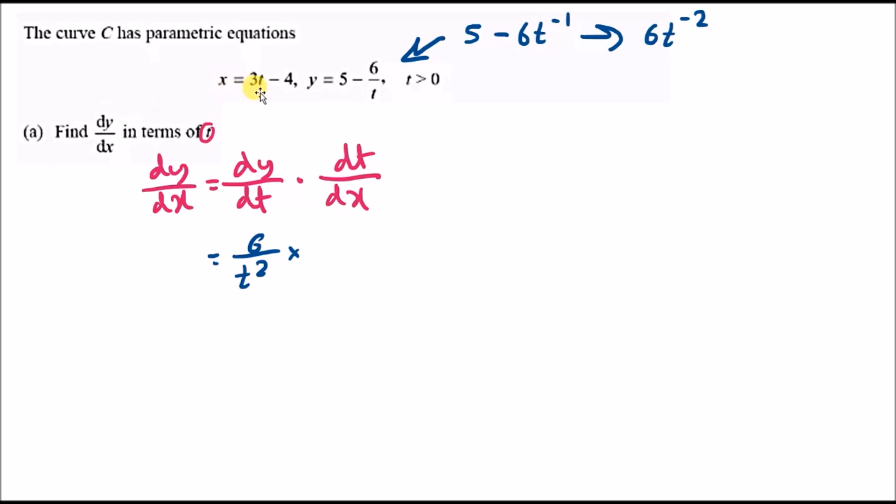Now for the other expression, we're differentiating x in terms of t. This should give us just 3. Because it's dt over dx, this is the reciprocal. dx over dt would be 3, so therefore dt over dx should be 1 over 3.